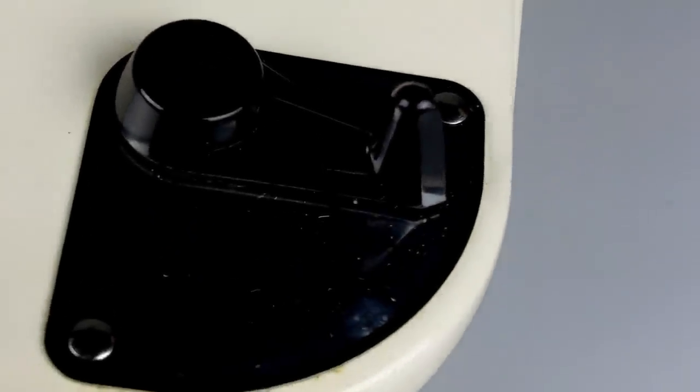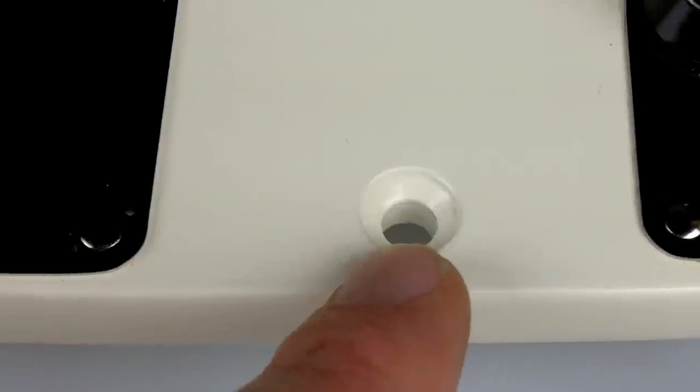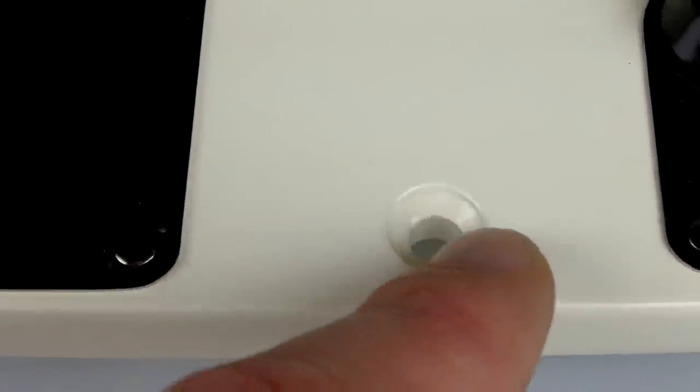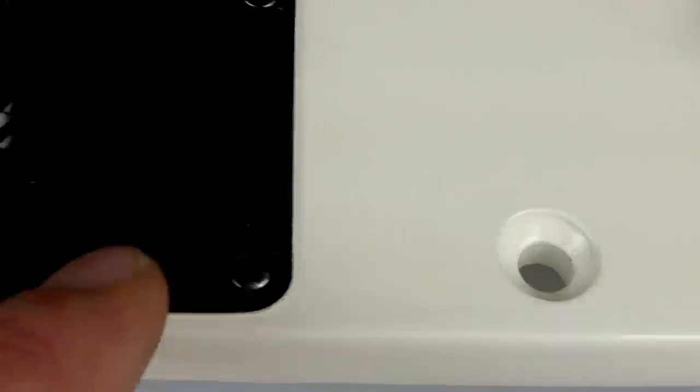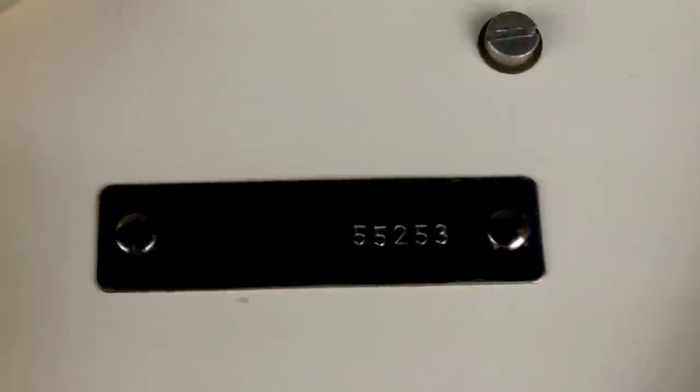Some of the critical elements to look for on so-called new old stock or unused 301s are the mounting holes here. The moment you put a bolt through those, they mark on the inside. This is only a very thin coating of powder coat, and as you can see, these are absolutely clean in all four cases. Again, there is the serial number 55253.